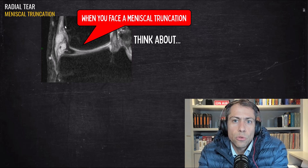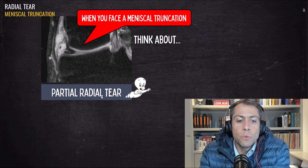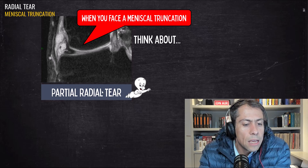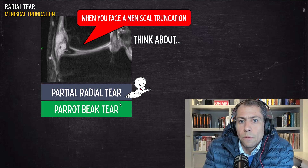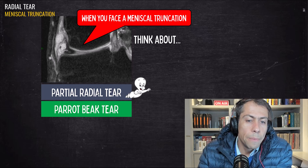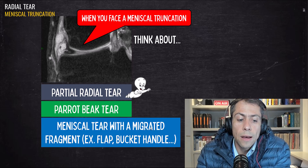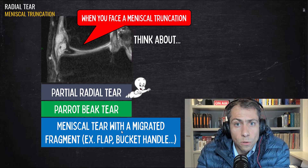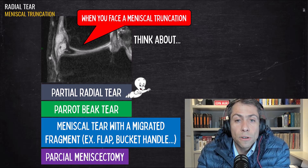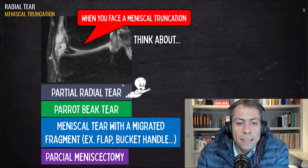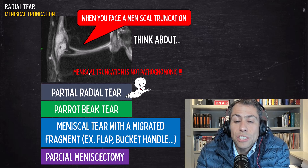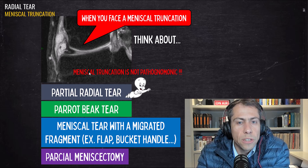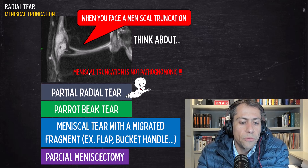When you face a meniscal truncation, you have to think about a partial radial tear — the Casper sign — but you also have to think about the parrot beak tear, which is a radial oblique tear. You also have to think about a meniscal tear with a migrated fragment, a flap, a bucket handle tear, and post-surgical alteration such as a partial meniscectomy. Remember that meniscal truncation is not pathognomonic of a partial radial tear; there are different pathologies that can generate this truncation.